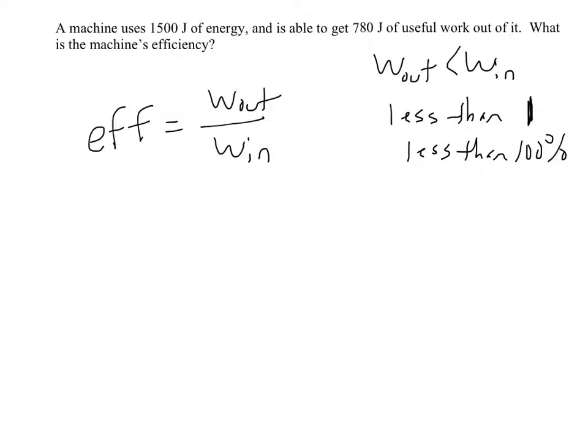So that's really all there is to this, is plugging into this formula. In this case, this machine uses 1,500 joules of energy and gets 780 joules of useful work out of it. So this is our work out, 780, and 1,500 is our work in.